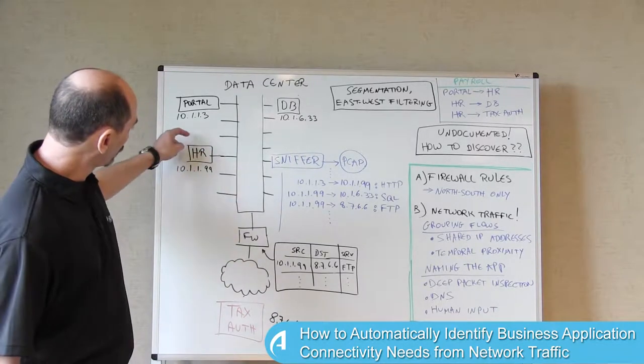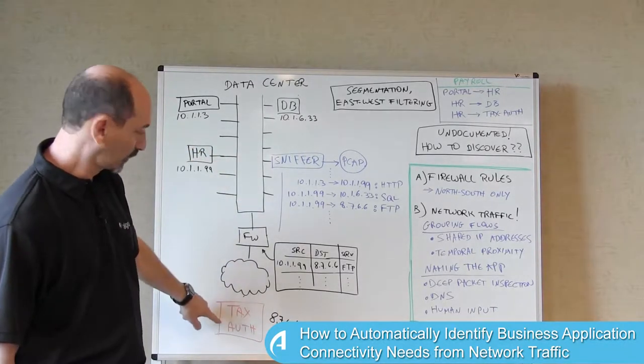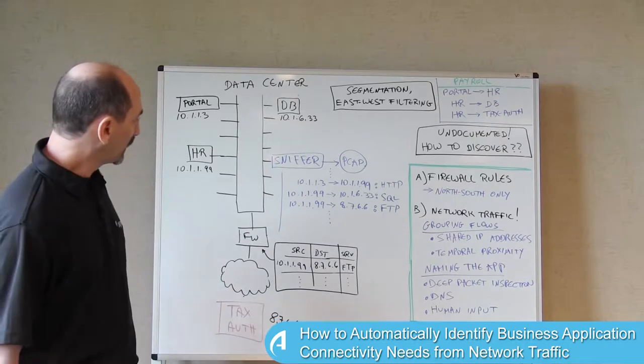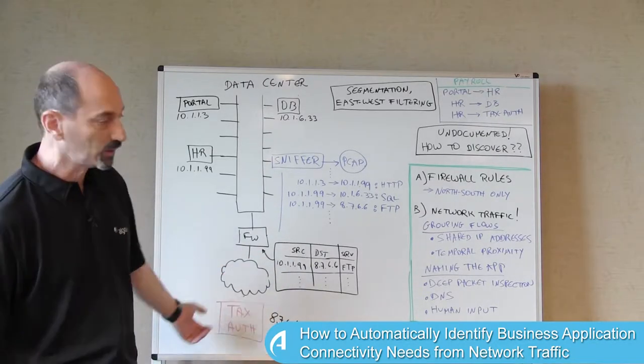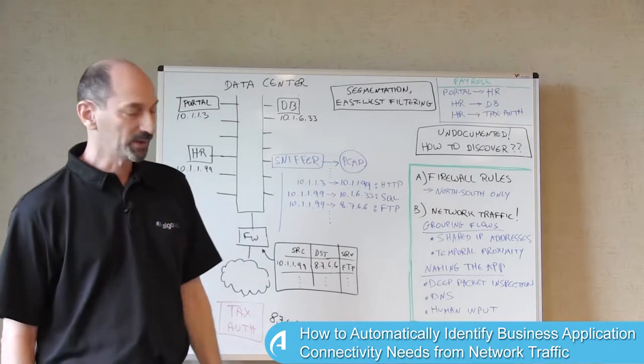So this would be a flow from this server here out towards the tax authority. So you can definitely recognize this flow and document it.